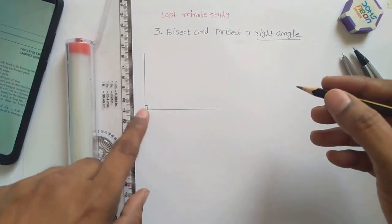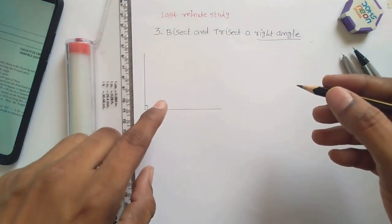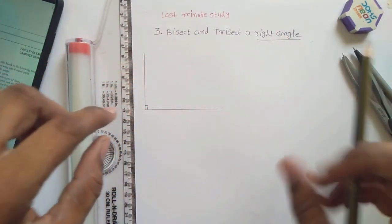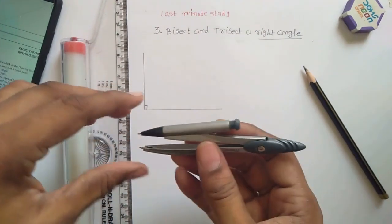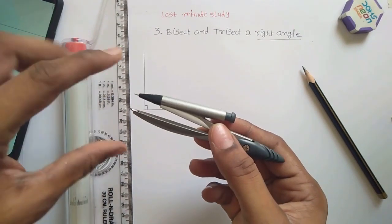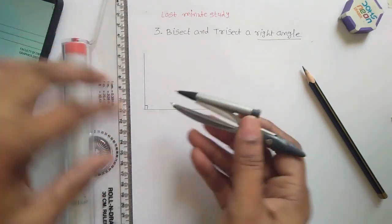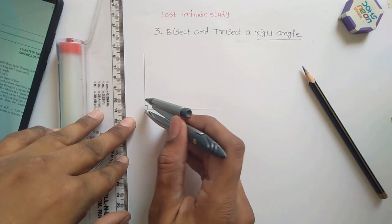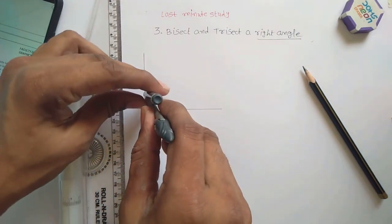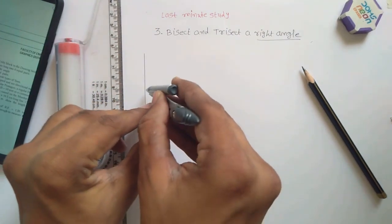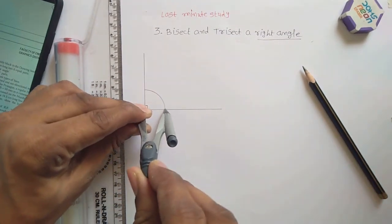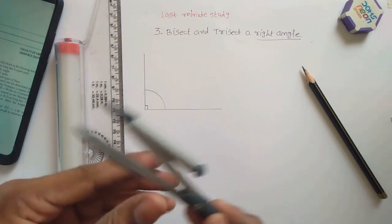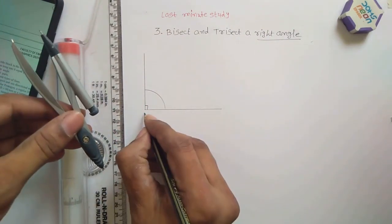And we want to bisect this. Bisect means two equal parts. To bisect, we need this instrument. So measure any random distance, no need to measure on the scale or anything. Just measure any random distance. You have to draw an arc like this. So this is a random distance. Now complete this thing.